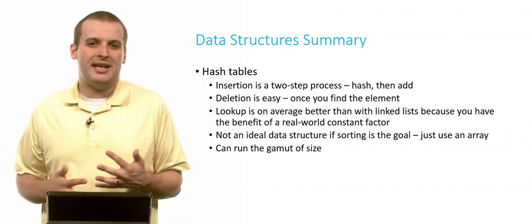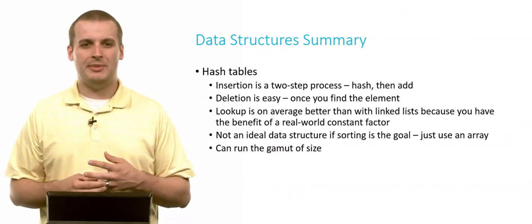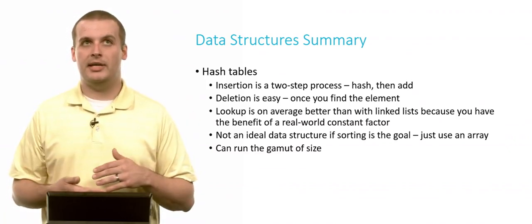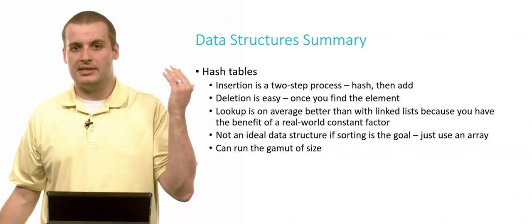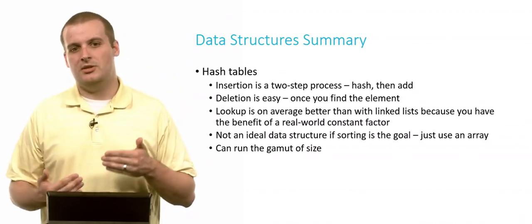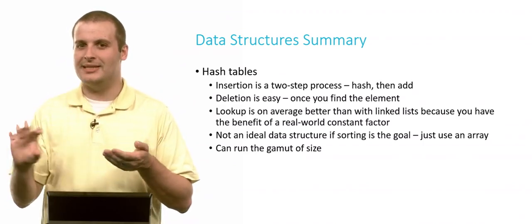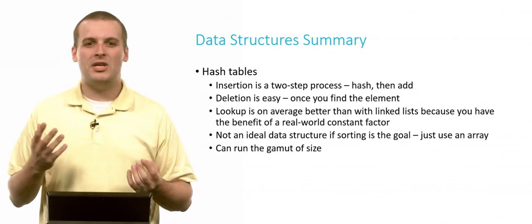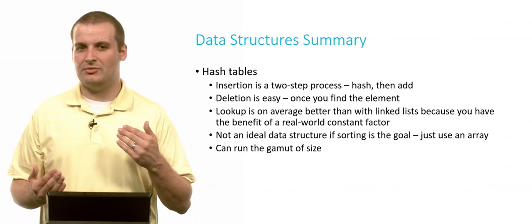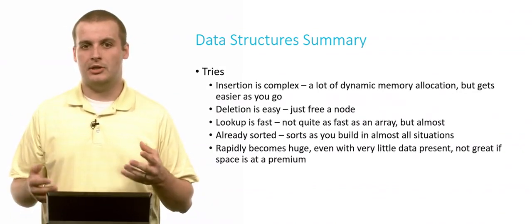And they can sort of run the gamut of size. It's hard to say whether a hash table is small or big, because it really depends on how large your hash table is. If you're only going to be storing five elements in your hash table, and you have a hash table with 10,000 elements in it, you're probably wasting a lot of space. In contrast, you can also have very compact hash tables, but the smaller your hash table gets, the longer each of those linked lists gets. And so there's really no way to define exactly the size of a hash table, but it's probably safe to say it's generally going to be bigger than a linked list storing the same data, but smaller than a trie.